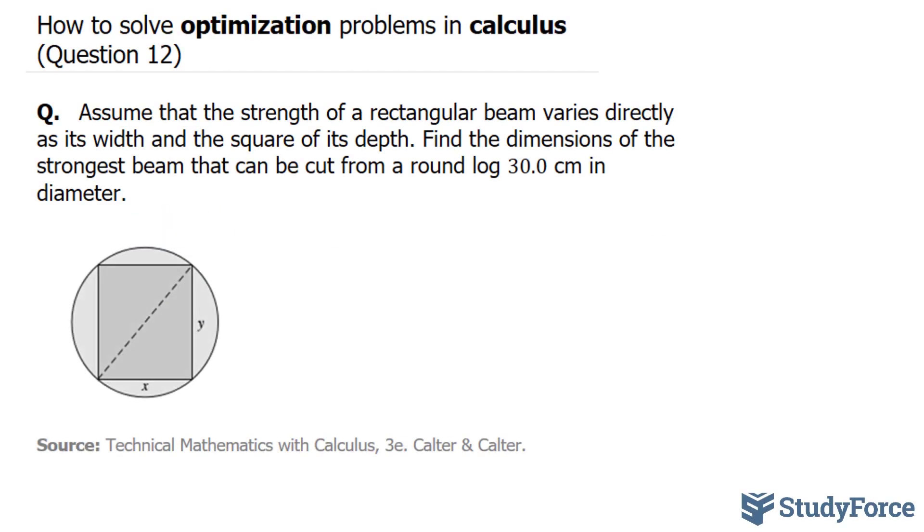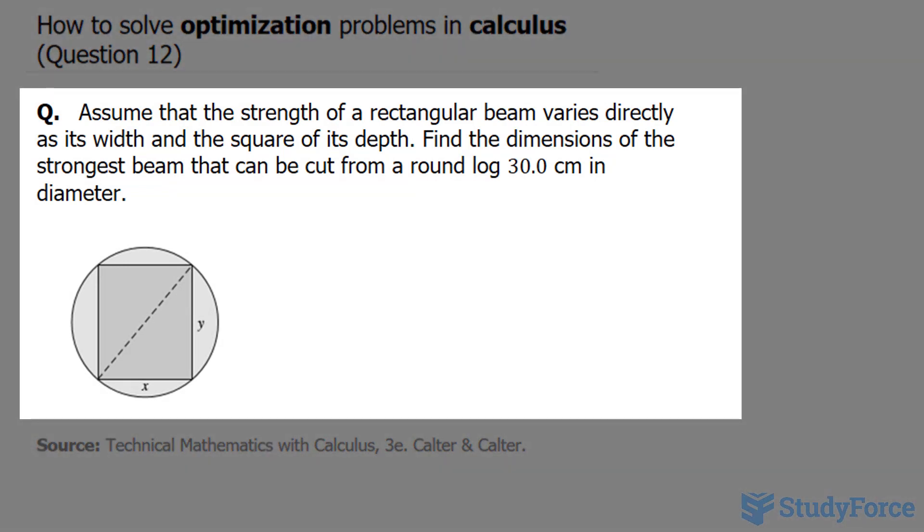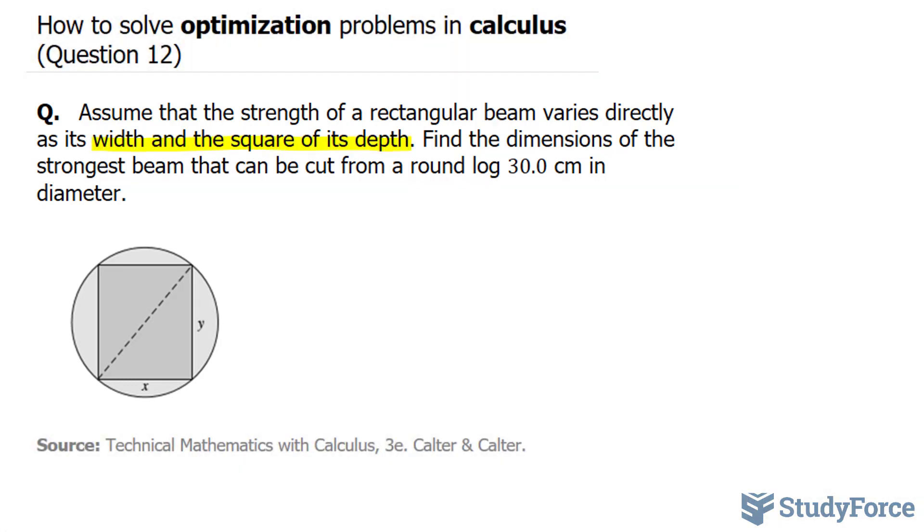In question 12 of this series we're asked, assume that the strength of a rectangular beam varies as its width and the square of its depth. So this is a direct variation where the strength varies according to its width and the square of its depth. Find the dimensions of the strongest beam that can be cut from a round log 30 centimeters in diameter.